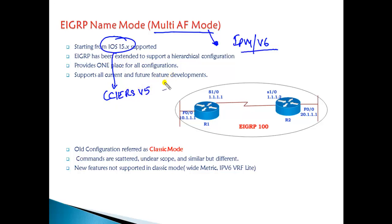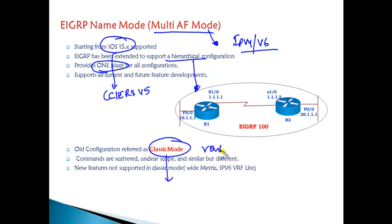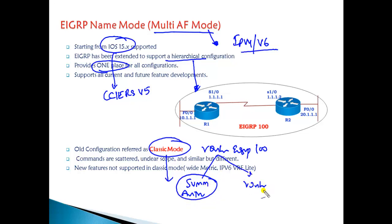The major difference in the new Named Mode is it supports hierarchical configuration, where all commands are configured under the same hierarchical design - more similar to IOS XR configurations. In the previous classic mode, we configure with 'router eigrp 100' where commands are scattered: summarization and authentication commands are configured under the interface, while other commands go inside the router mode. In Named Mode, all configurations are supported under the same routing configuration.